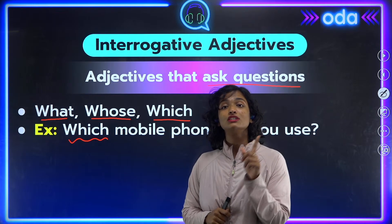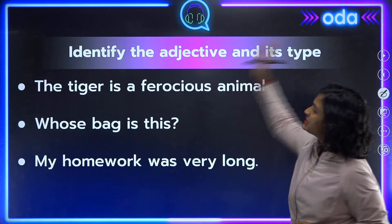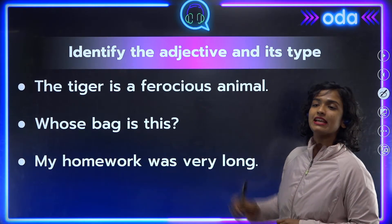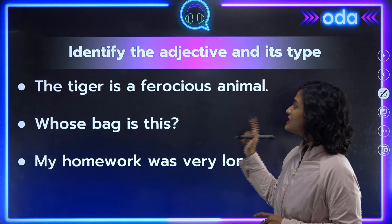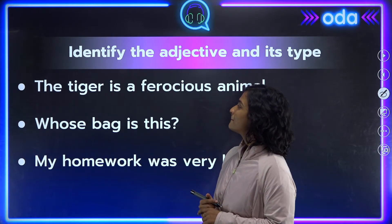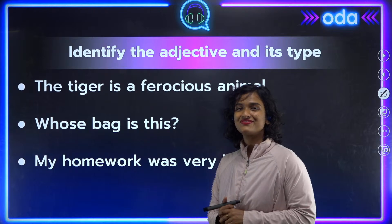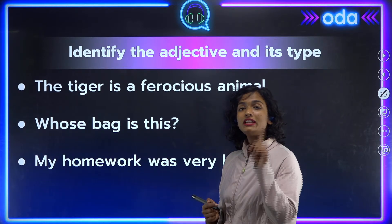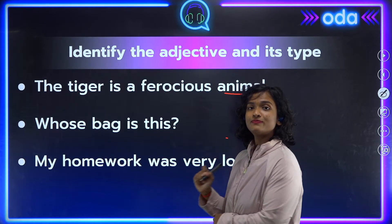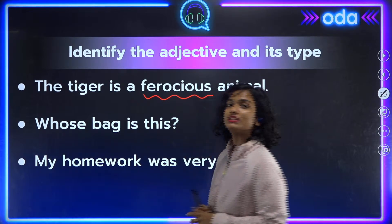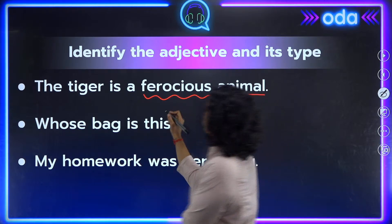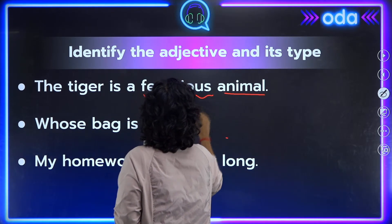Now I'm going to ask you to identify the adjectives and their types. Number one: 'The tiger is a ferocious animal.' Can you identify how many adjectives there are and what type they are? Here we have only one adjective — the noun is 'animal' and the adjective is 'ferocious,' which tells us what kind of animal the tiger is. This is a descriptive adjective.